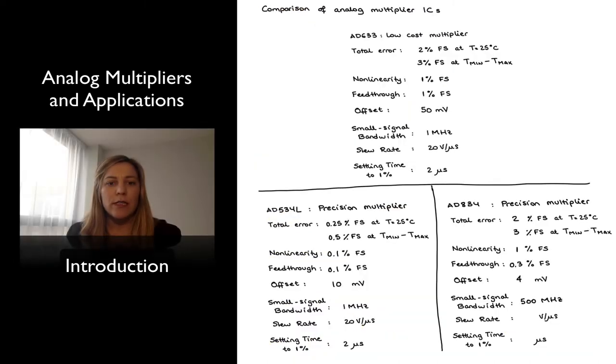In order to get an idea of typical characteristics or typical performance of an analog multiplier, I have drawn a little comparison of three analog multiplier ICs that have been optimized for different performance parameters. The first one is the AD633, which is the low-cost multiplier we have previously looked at. Since it is a low-cost multiplier, we are expecting that the performance is going to be fairly average in all the different parameters. Notice it specifies in the datasheet its total error as 2% of the full-scale range at a nominal temperature of 25 degrees C, or 3% of the full-scale range over the entire temperature range.